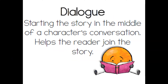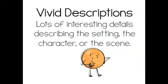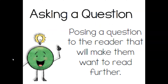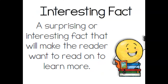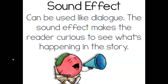Dialogue — starting the story in the middle of a character's conversation — helps the reader join in the story. Vivid descriptions use lots of interesting details describing the setting, character, or scene. Asking a question means posing a question to the reader that will make them want to read further. An interesting fact is a surprising or interesting fact that will make the reader want to read on to learn more. A sound effect can be used like dialogue — it makes the reader curious to see what's happening in the story.